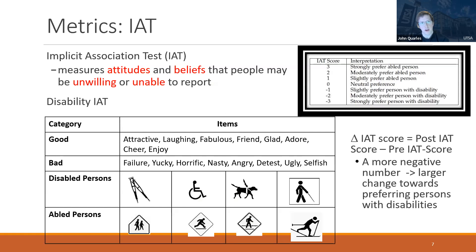To measure implicit attitudes, we used the Implicit Association Test (IAT), specifically one developed to investigate preferences toward people with disabilities compared to those without. We focused on the change in IAT score from pre to post. In this case, a more negative number implies a larger change towards preferring persons with disabilities.